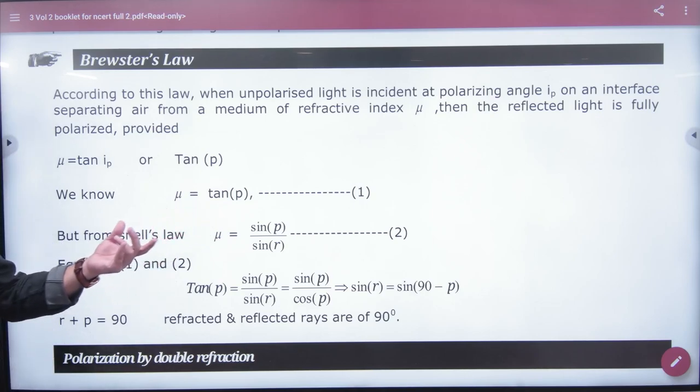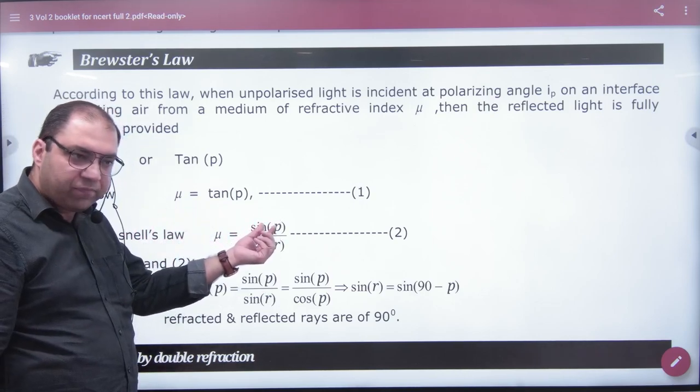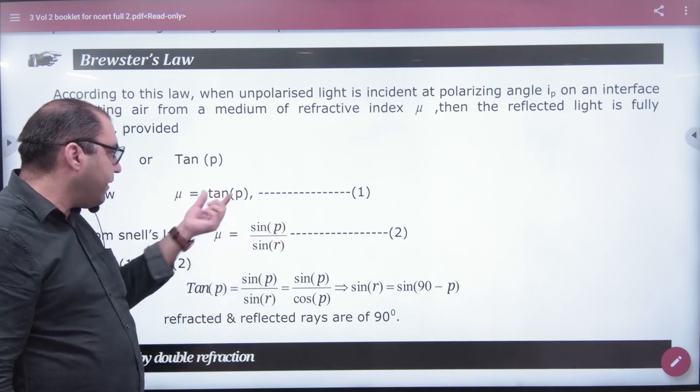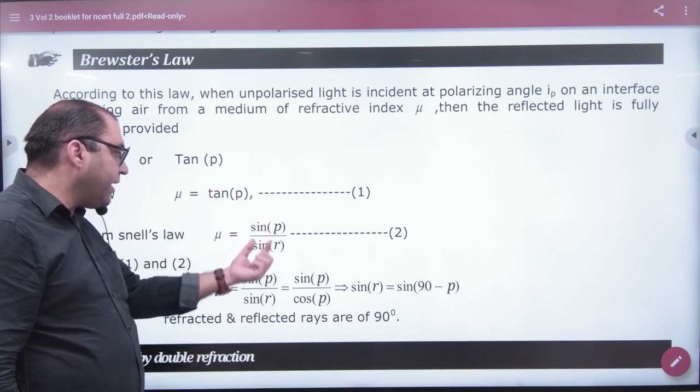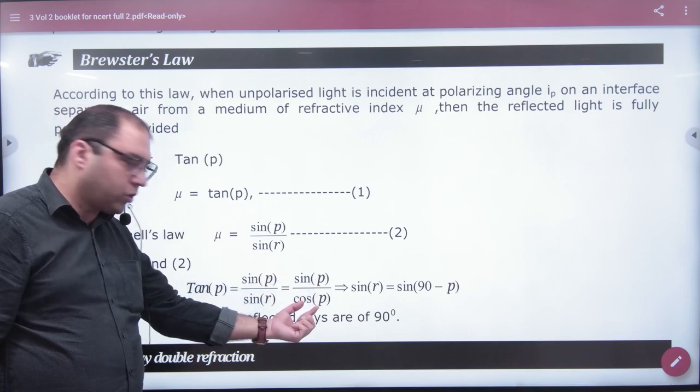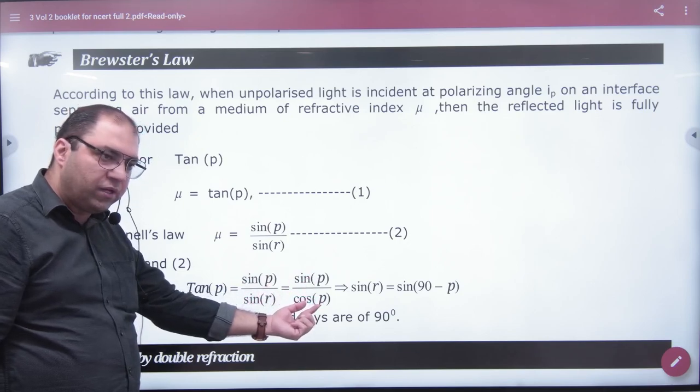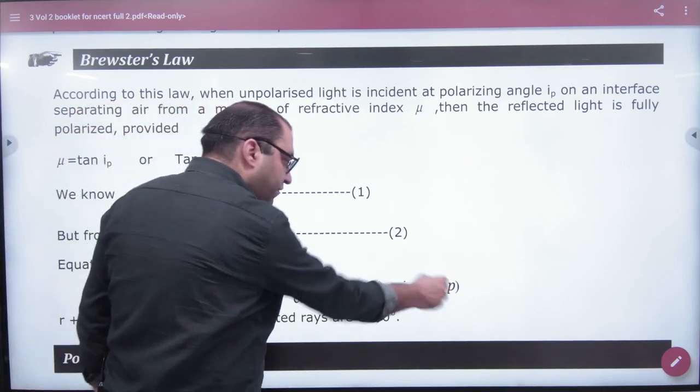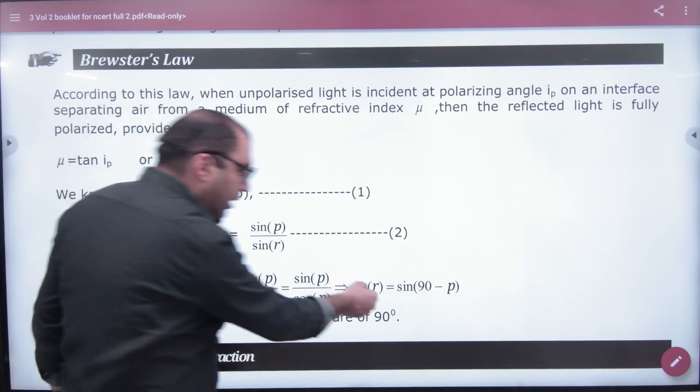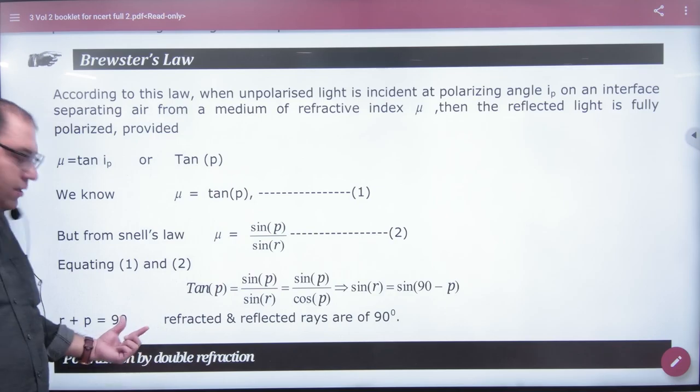Snell's law was done. Snell's law means mu is equal to sin i by sin r. Here i cap p. We equate both. This is tan p. This is sin p by sin r. Now tan p is sin p by cos p. Sin p cancel, sin r is equal to cos p. Cos p is sin of 90 minus p. So r is equal to 90 minus p. So r plus p sum will be 90.